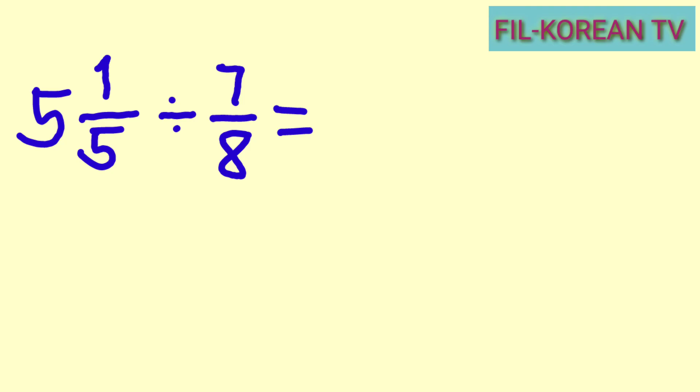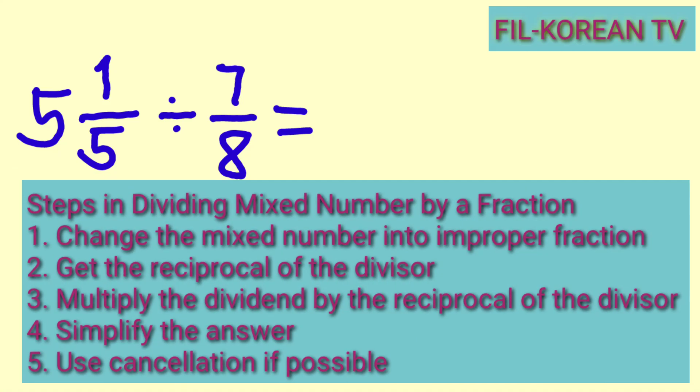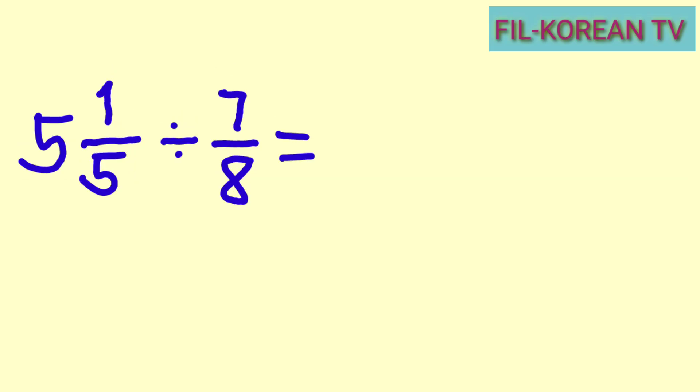To solve this problem we need to follow the steps in dividing a mixed number by a fraction. One: change the mixed number into an improper fraction. Two: get the reciprocal of the divisor. Three: multiply the dividend by the reciprocal of the divisor. Four: simplify the answer. And five: use cancellation if possible.